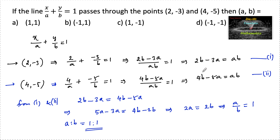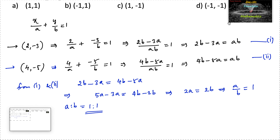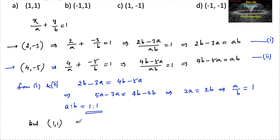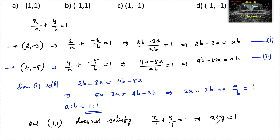From the four options we can consider option a (1, 1) and option b (-1, -1) because both give ratio 1 to 1. However, if a = 1 and b = 1, the line becomes x + y = 1, and the point (2, -3) does not satisfy this — since 2 + (-3) = -1, not 1. So (1, 1) is not possible.